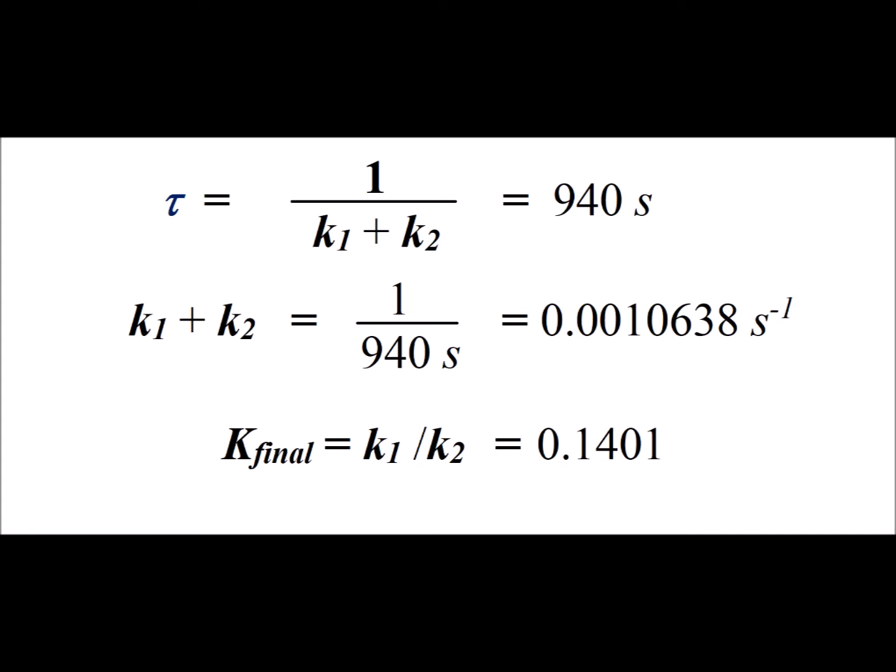So k1 plus k2 is 1 over 940 seconds, which gives us 0.0010638 inverse seconds. We also know that the equilibrium constant k1 divided by k2 is equal to 0.1401.